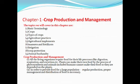Animals, including humans, cannot make their own food, so they are dependent on plants. Plants make their food by the process known as photosynthesis — similar to how people cook food in a kitchen. Animals and humans are totally dependent on plants, and sometimes on other animals, for their food. In order to provide food for a large population, regular production, proper management, and distribution of food is necessary.